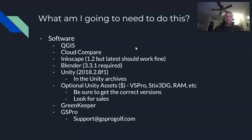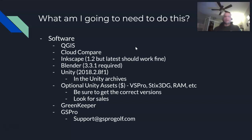Now we get to the optional Unity assets — this is where you might have to spend some money depending on what you want to do. The most popular one I'd recommend first is VS Pro, Vegetation Studio Pro. VS Pro makes planting things like trees, grasses, vegetation, and rocks turn from a pain into a pleasure. It's fun with VS Pro.